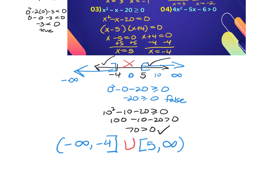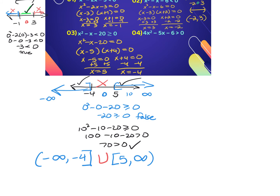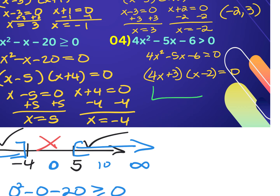The next problem has an 'a' term — a number in front of x², making factoring a bit more challenging. Treating it as equal to 0: factors of 4 and factors of negative 6 — I'll use 4 and 1, then 3 and 2. To verify, just check the outer and inner terms when FOILing: outside gives -8x, inside gives +3x, which together give -5x in the middle. So the factoring is correct.